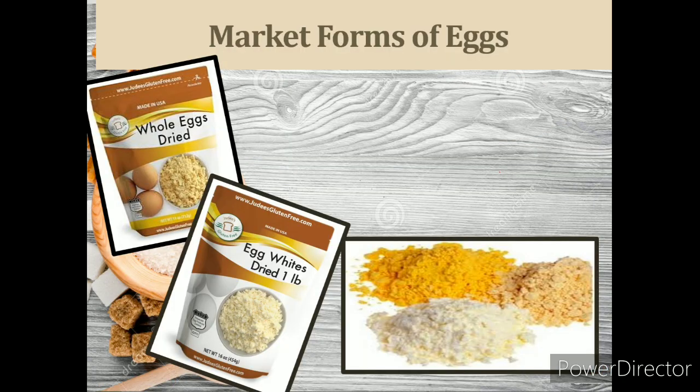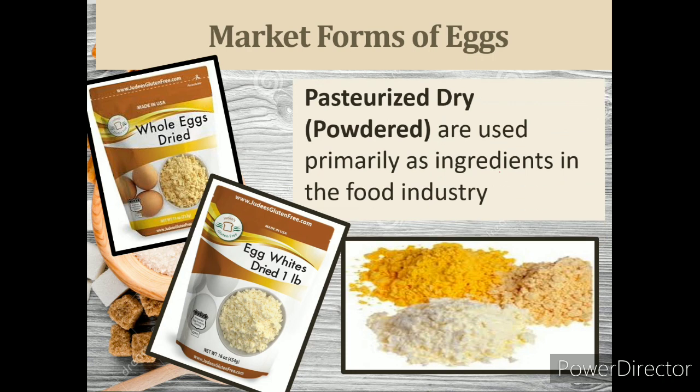The last market form of egg is pasteurized dried or powdered egg. With dried egg product, you get all the benefits of a fresh egg without worrying that the egg will go bad. Dried egg product acts like real egg because it is real egg — it's simply dehydrated. Dried egg products are non-perishable and if made and stored correctly, they can last for a long time. Dried eggs are seldom used; their whites are used for preparing meringue. They are used primarily as ingredients in the food industry and are not commonly sold directly to consumers.